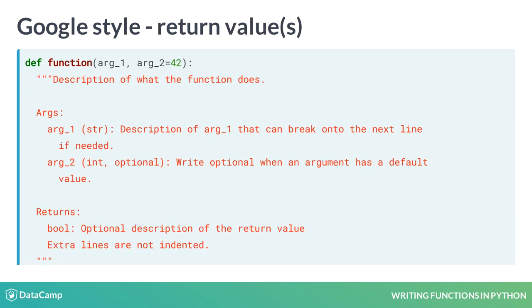The next section is the returns section, where you list the expected type or types of what gets returned. You can also provide some comment about what gets returned, but often the name of the function and the description will make this clear. Additional lines should not be indented.